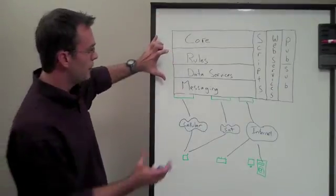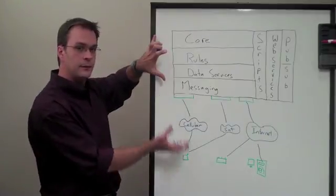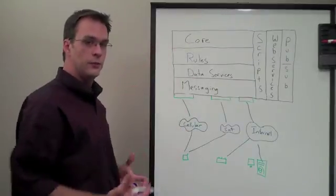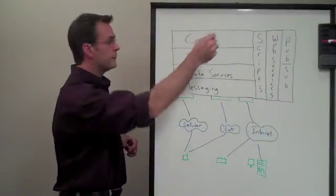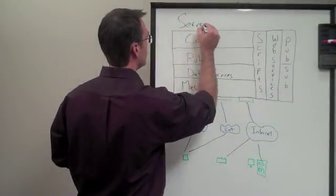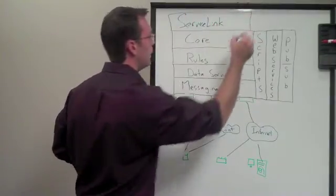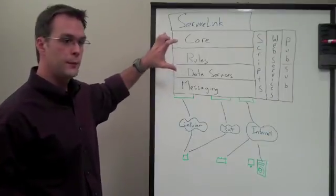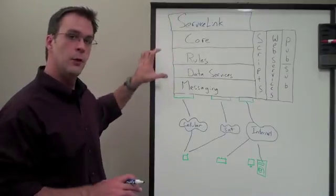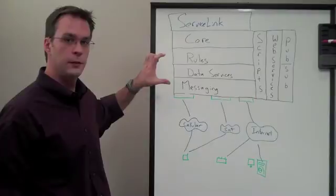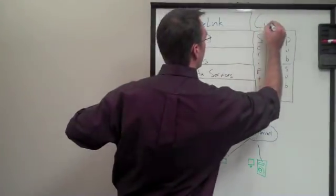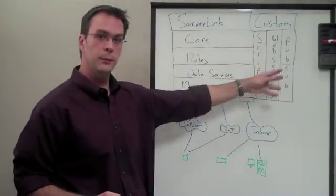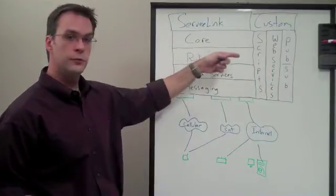We've got this core platform and this flexible way of getting data from devices in and out of the platform. But what we've got is a set of services — they aren't end-user applications. To top it all off, we've got our ServiceLink set of apps that are tailored for remote device service intelligence. But depending on your business model, you may not necessarily be a remote service organization. So we also support custom applications built on top of our web services, publish-subscribe integrations, and our rules and scripting integrations.